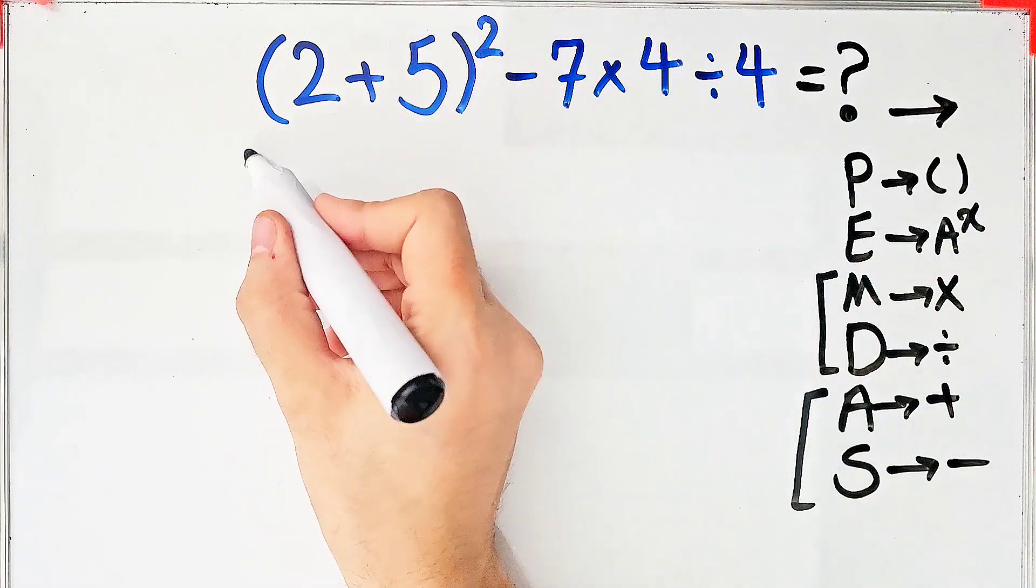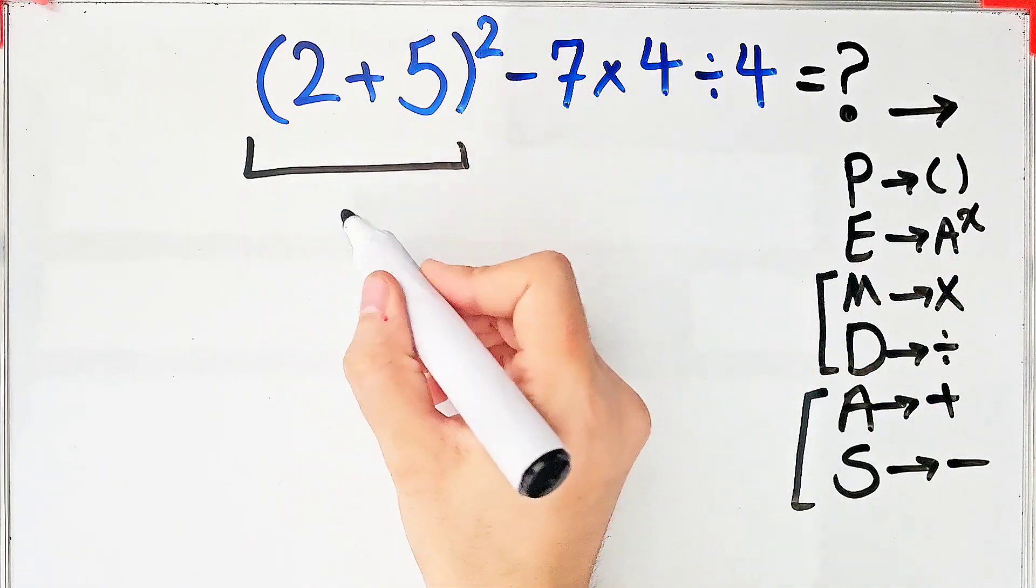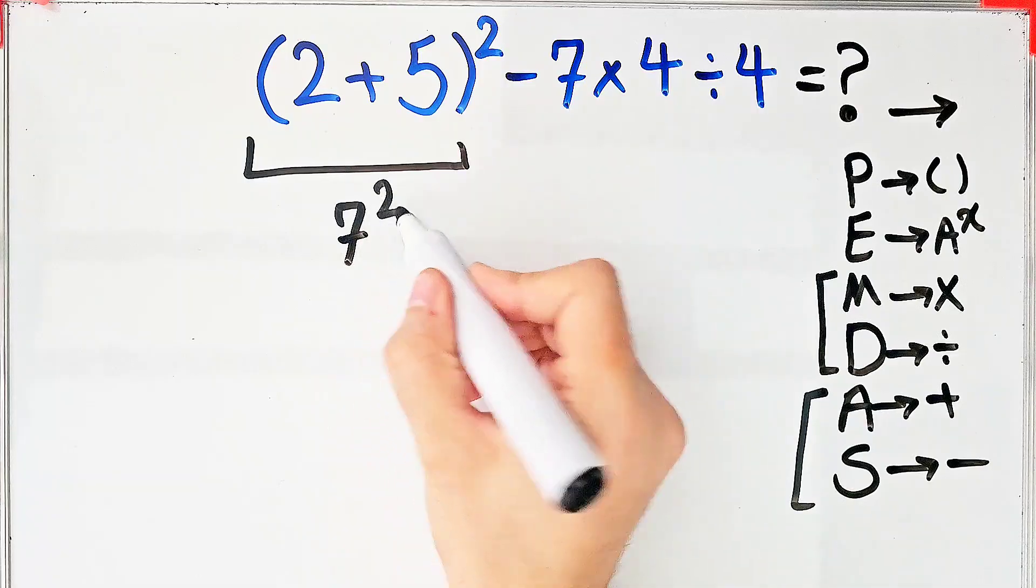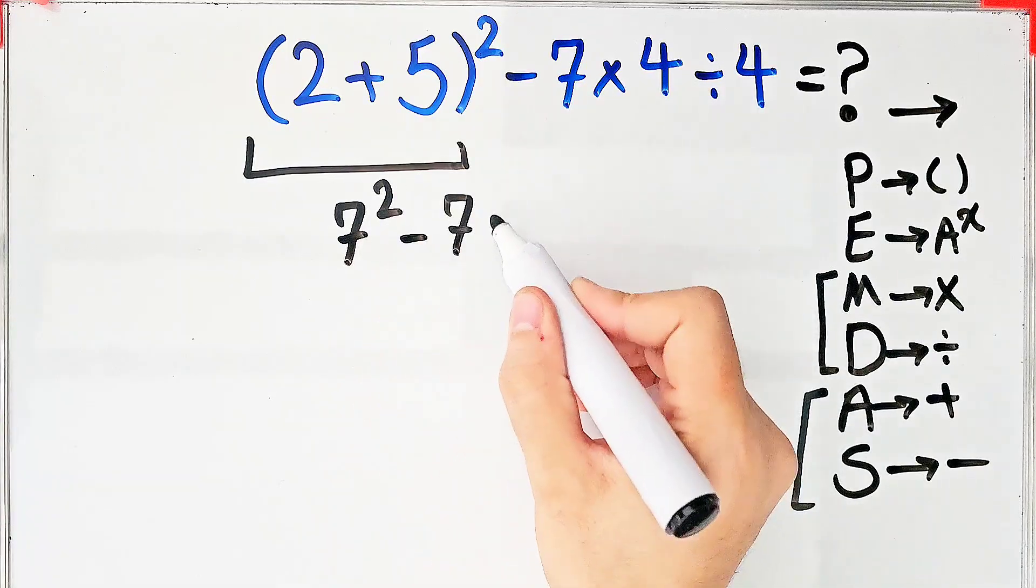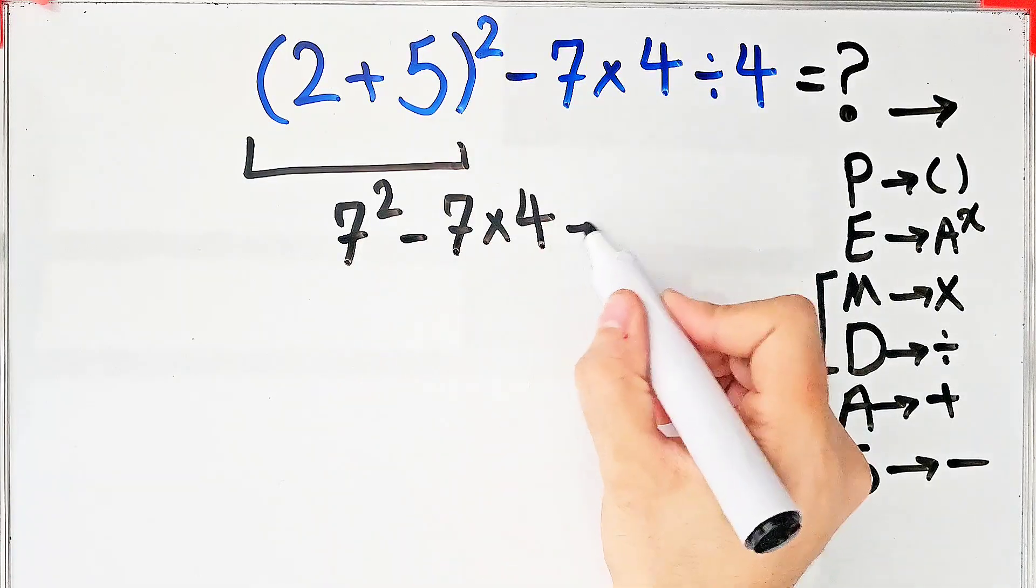First, we simplify these parentheses: 2+5 equals 7. So we have 7² - 7×4÷4.